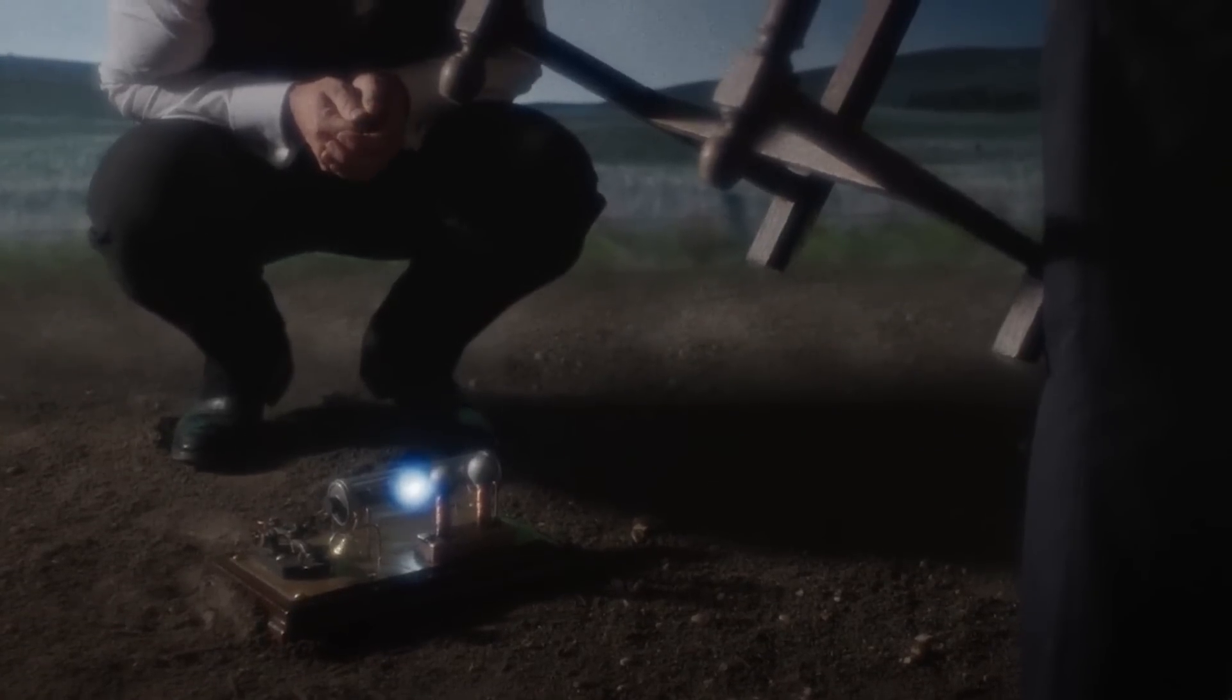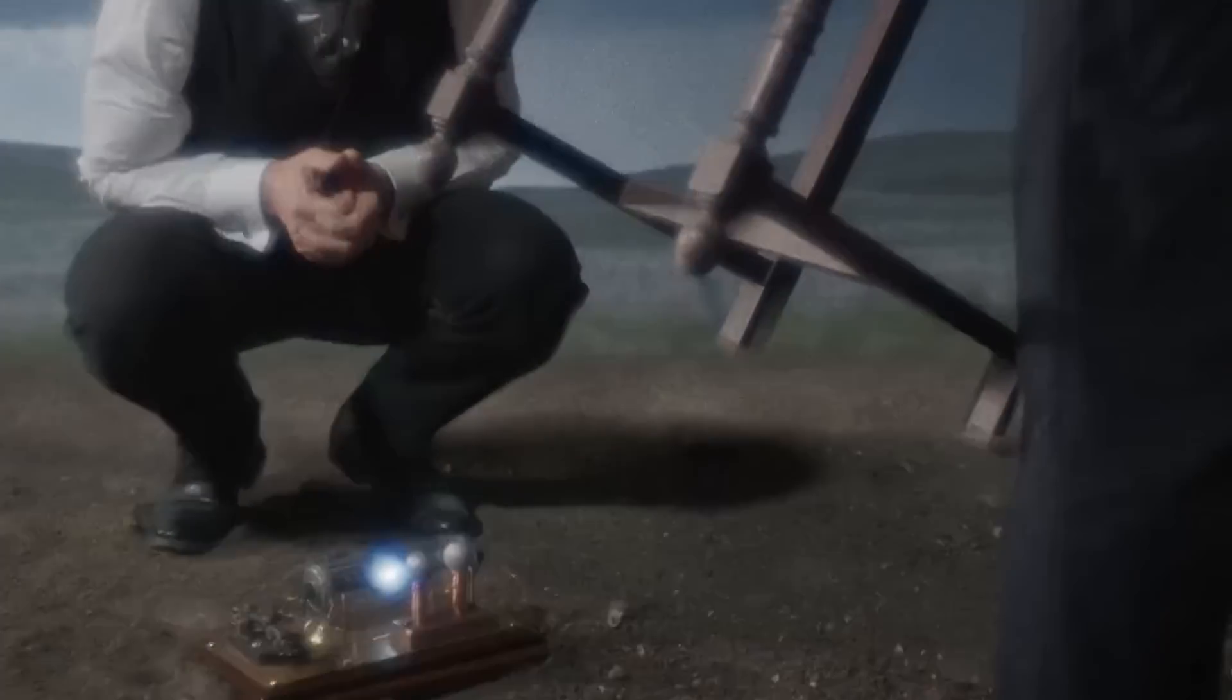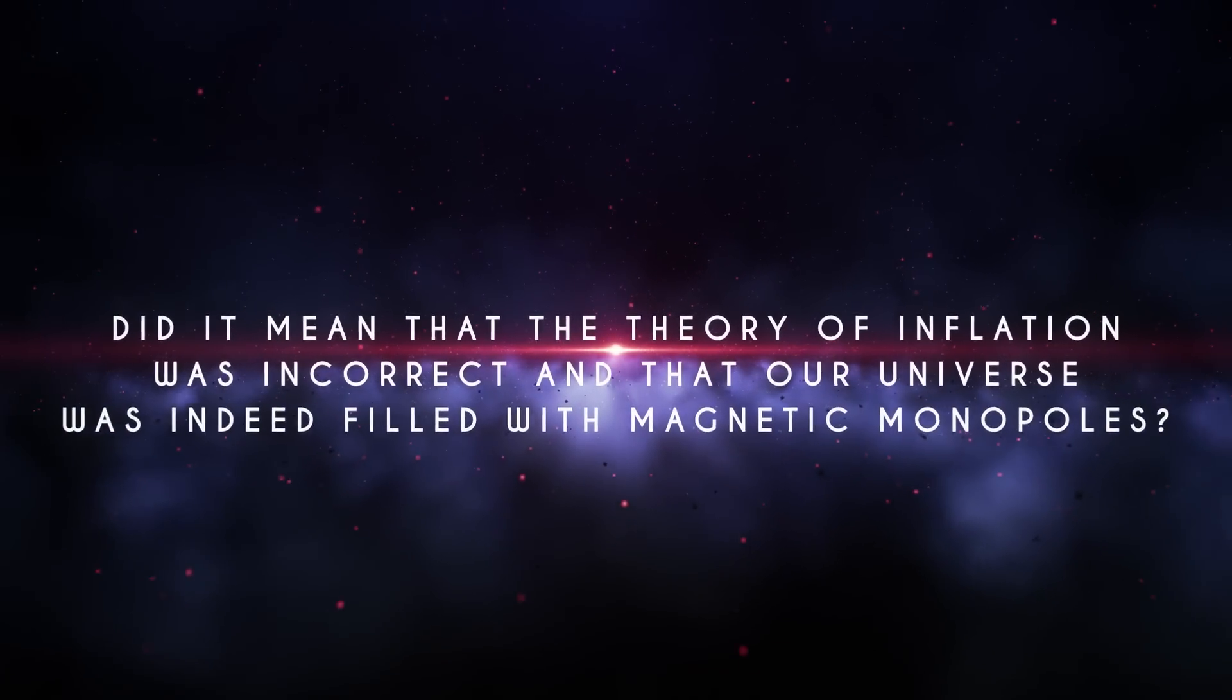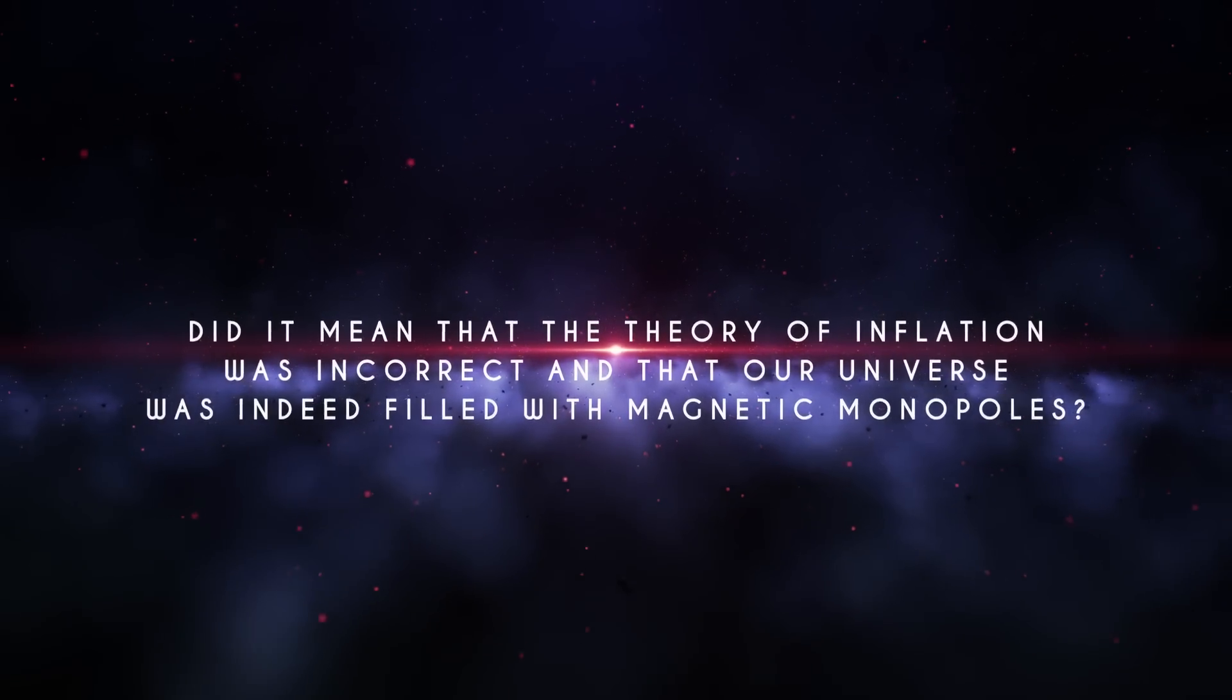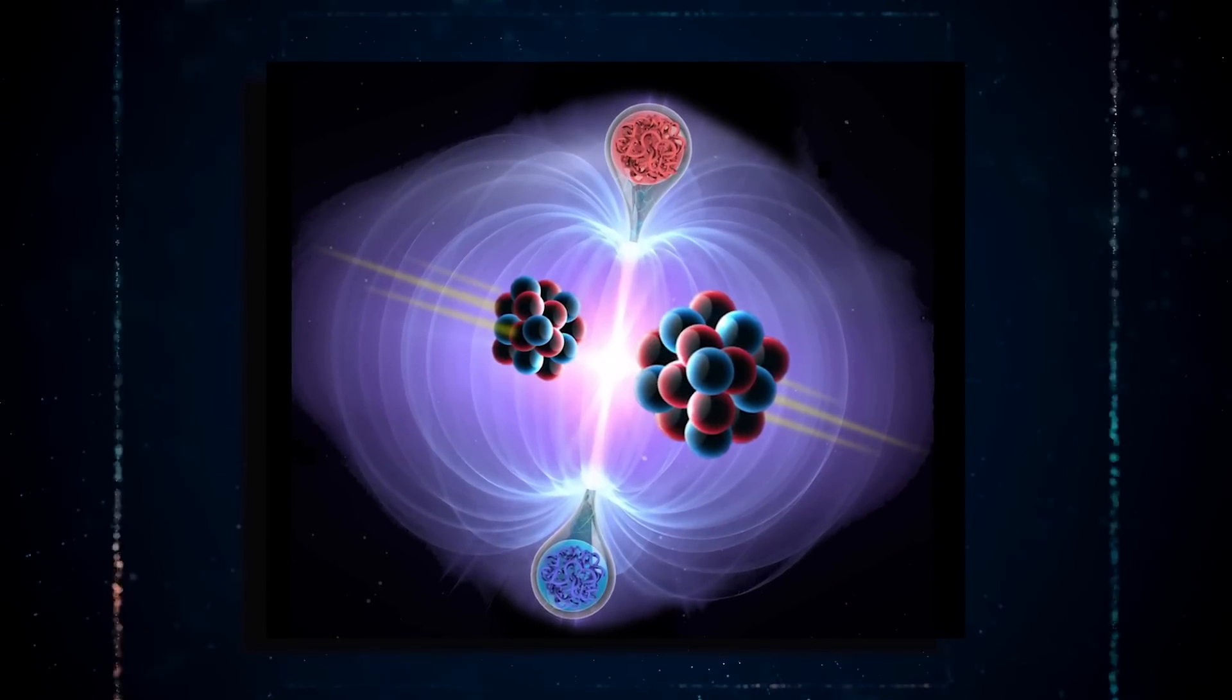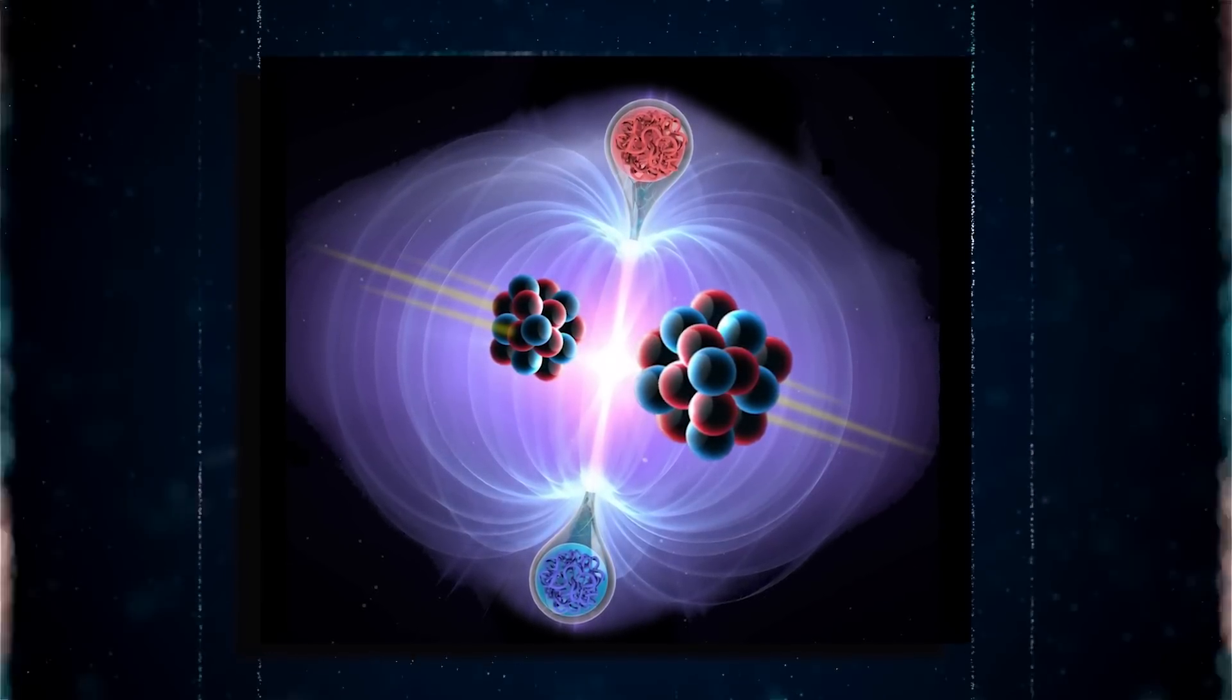This discovery caused great interest in the project and raised several questions. Did it mean that the theory of inflation was incorrect and that our universe was indeed filled with magnetic monopoles? Or did it mean that the monopole that should have persisted in our universe happened to pass through Cabrera's detector?